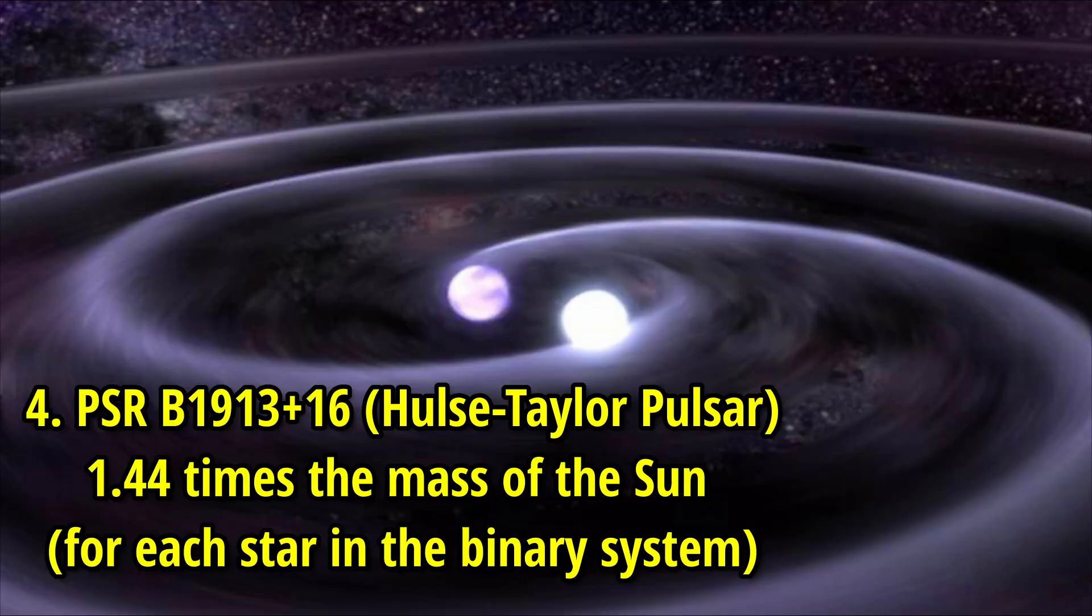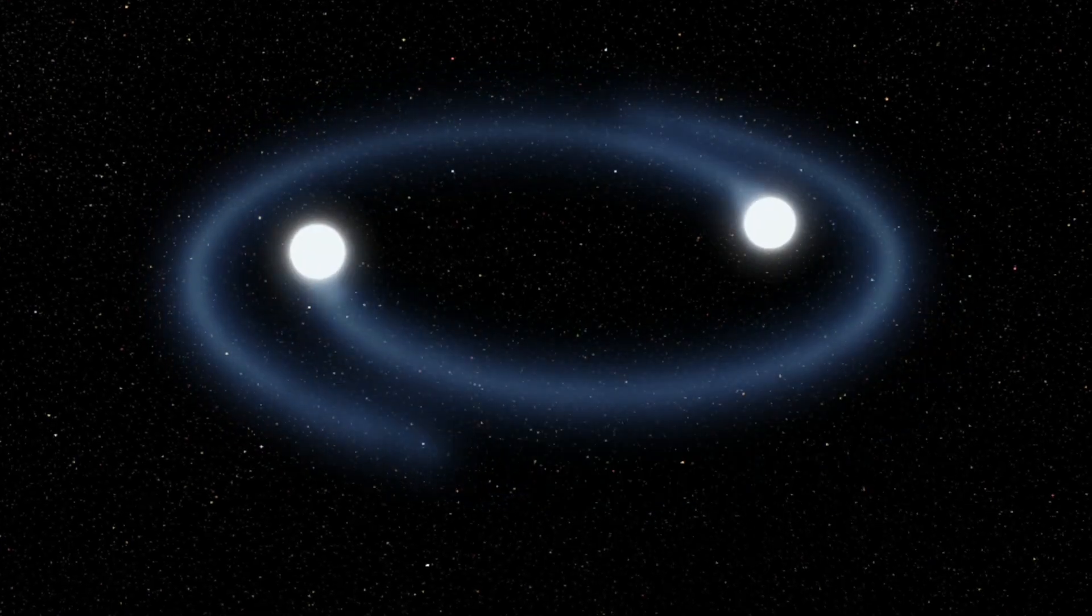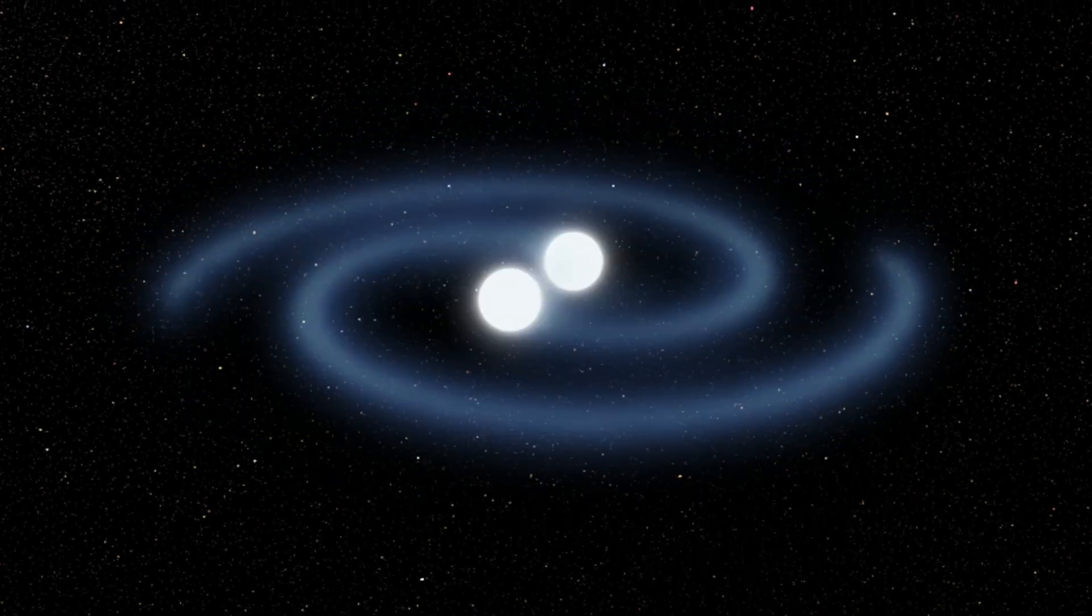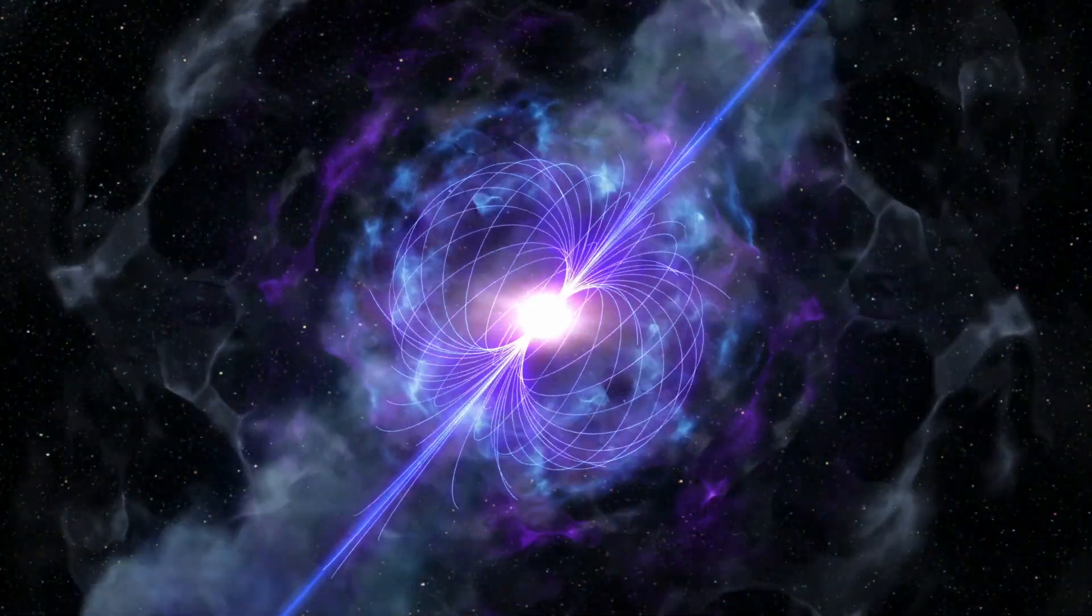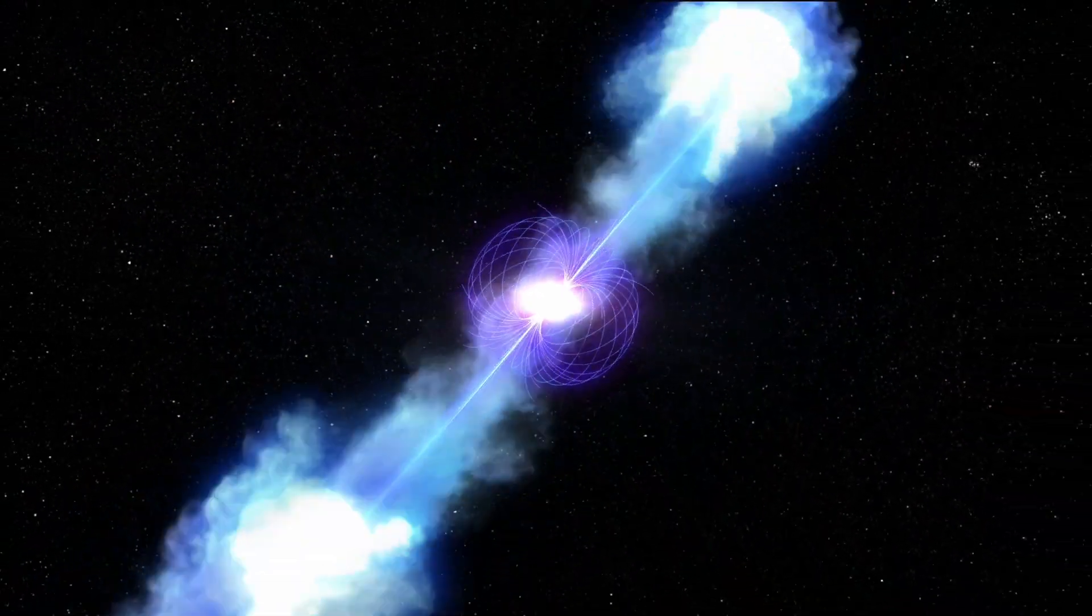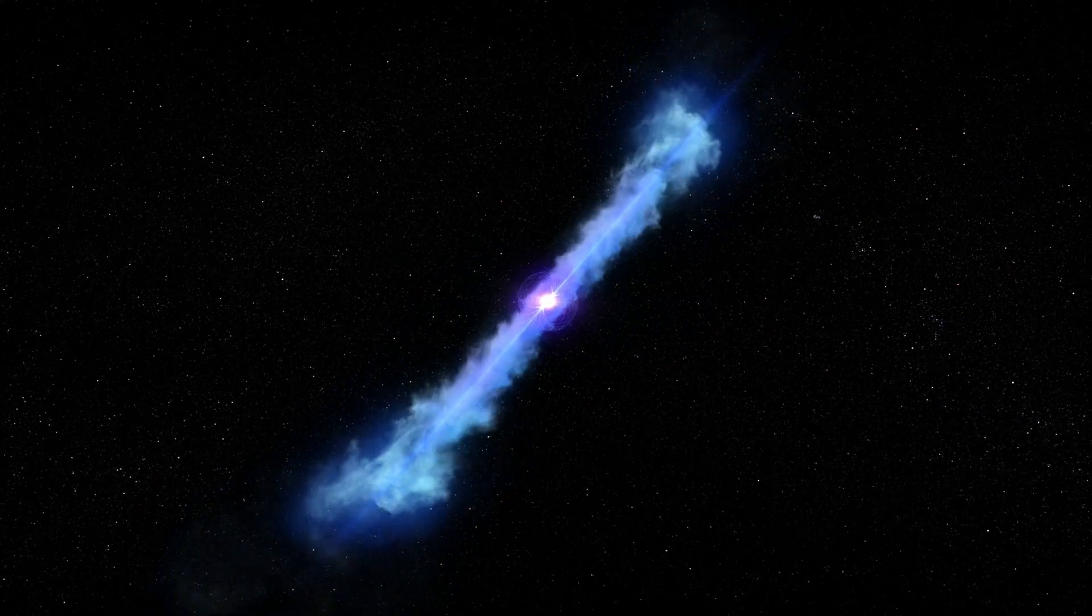While not the most massive individually, this binary pulsar system is significant for demonstrating the effects of general relativity through its gravitational wave emissions. It's known for its high precision measurements and is located around 21,000 light years away.